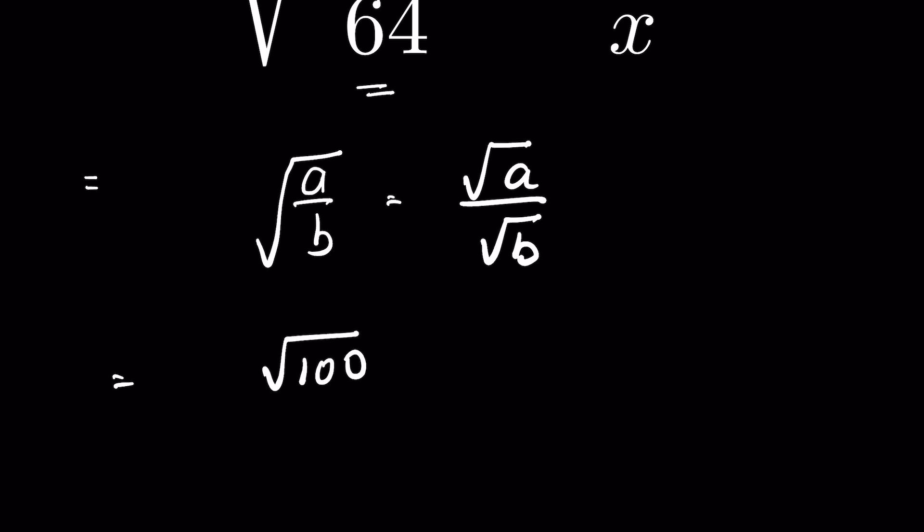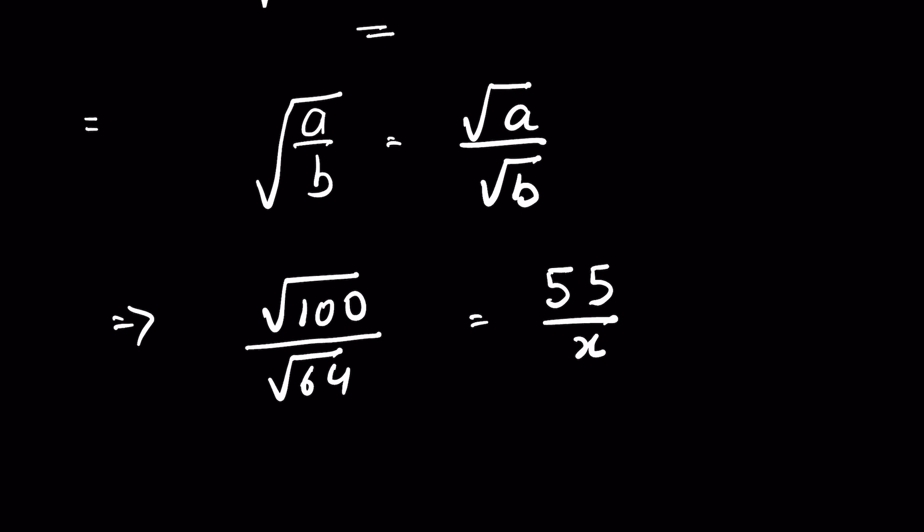So it will be square root of 100 upon square root of 64 is equal to 55 upon x.